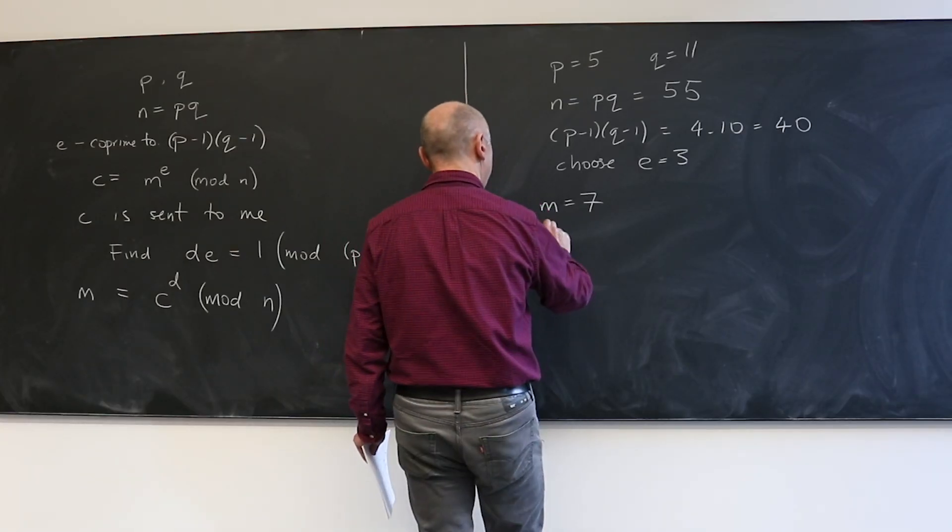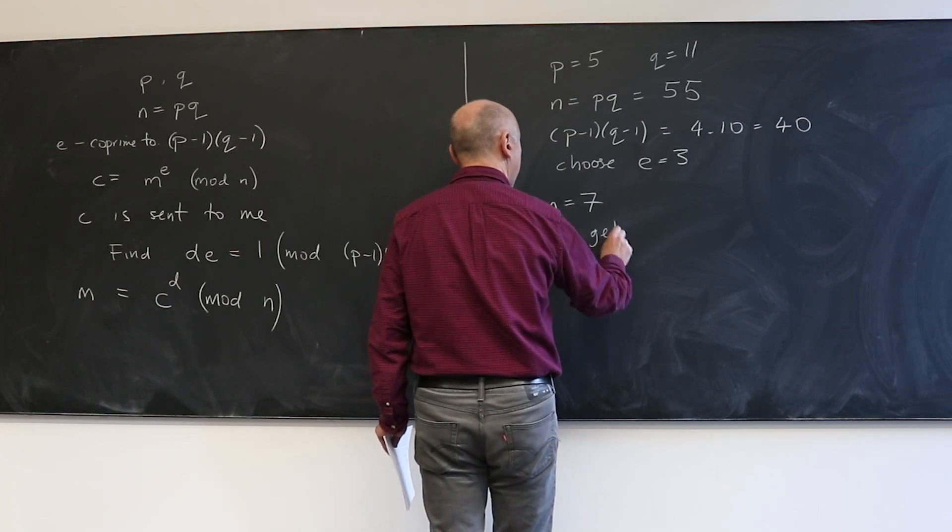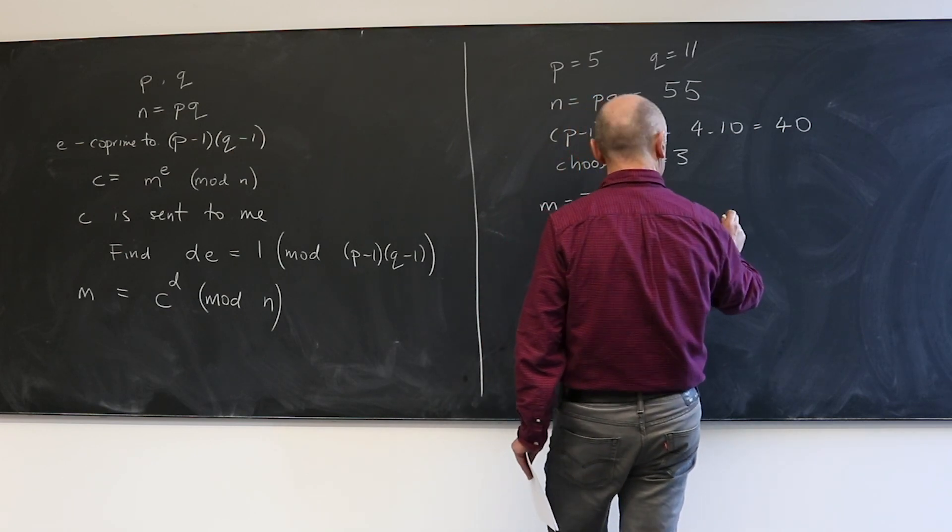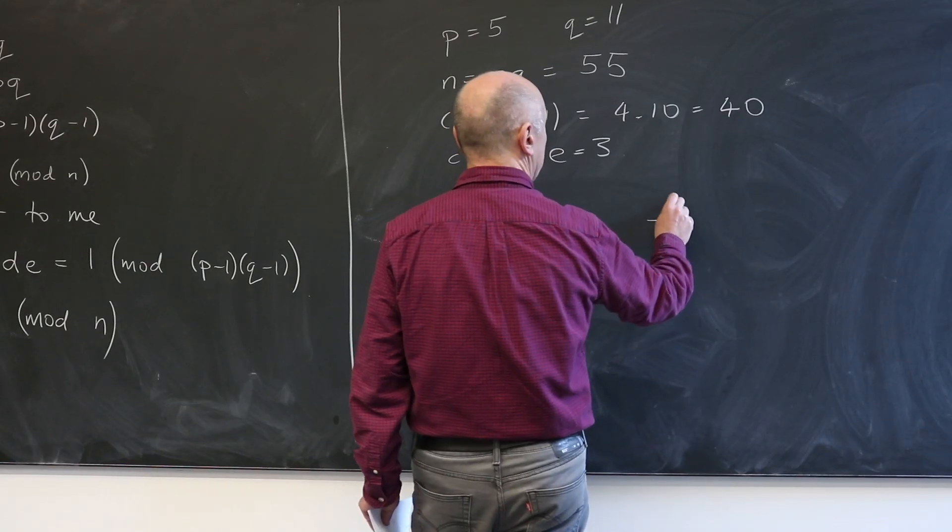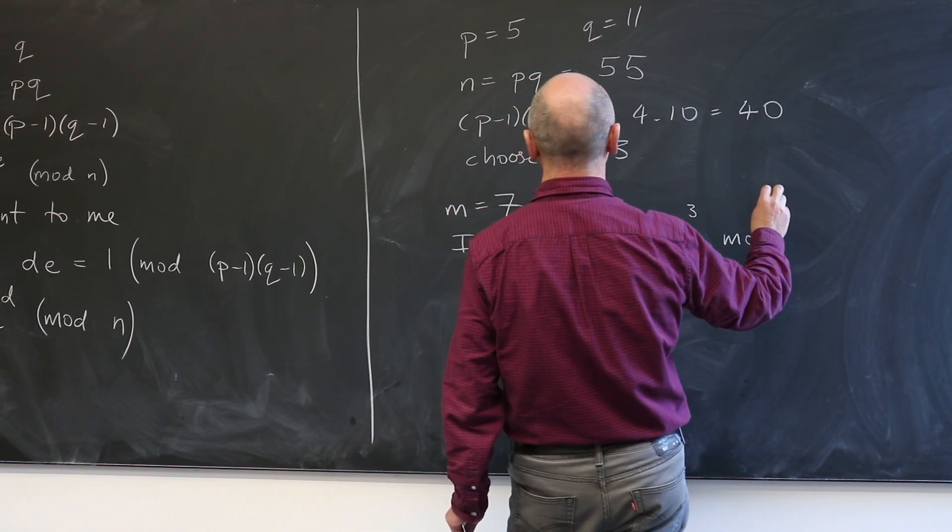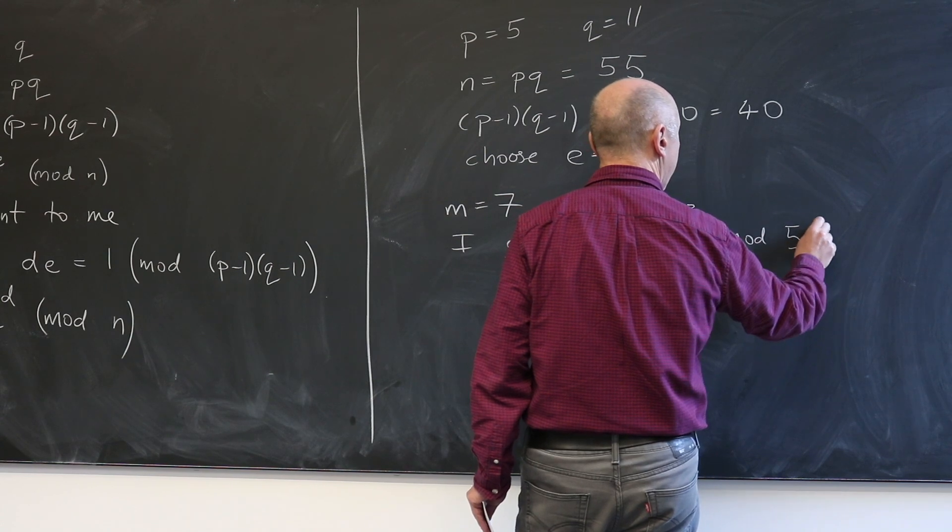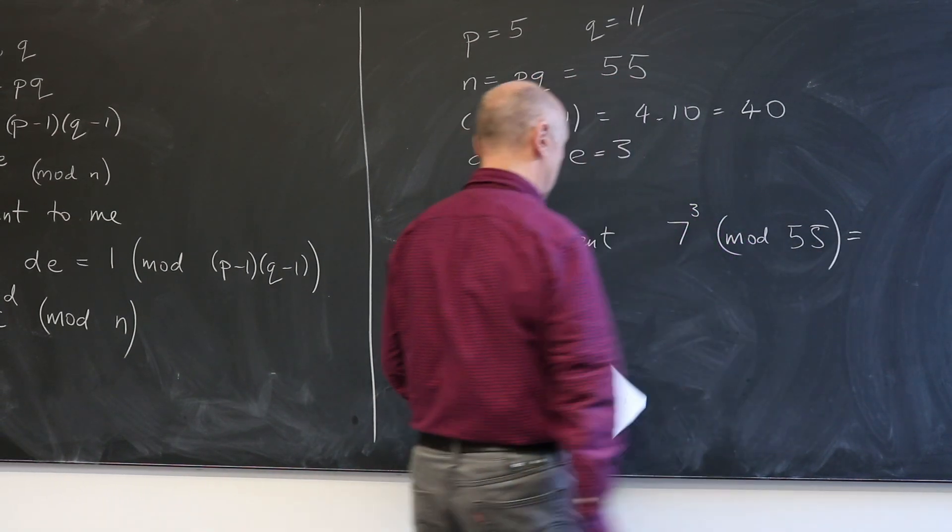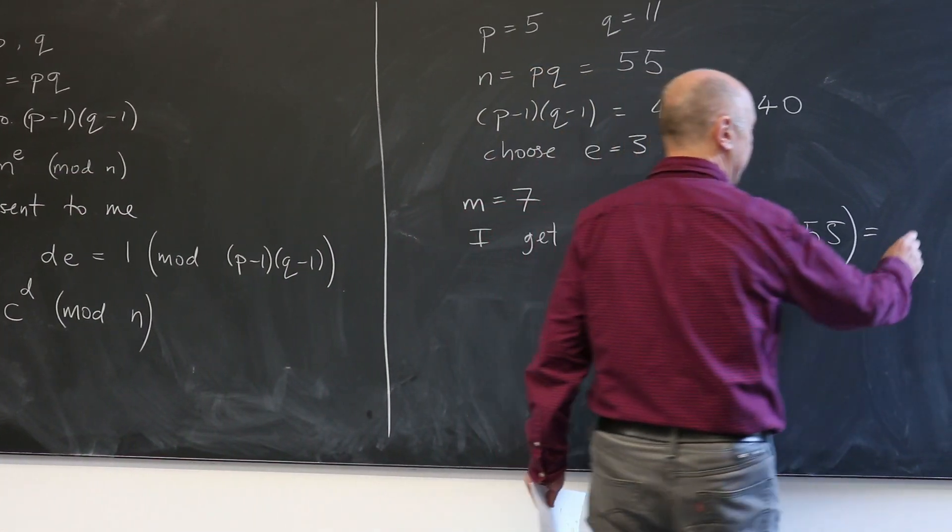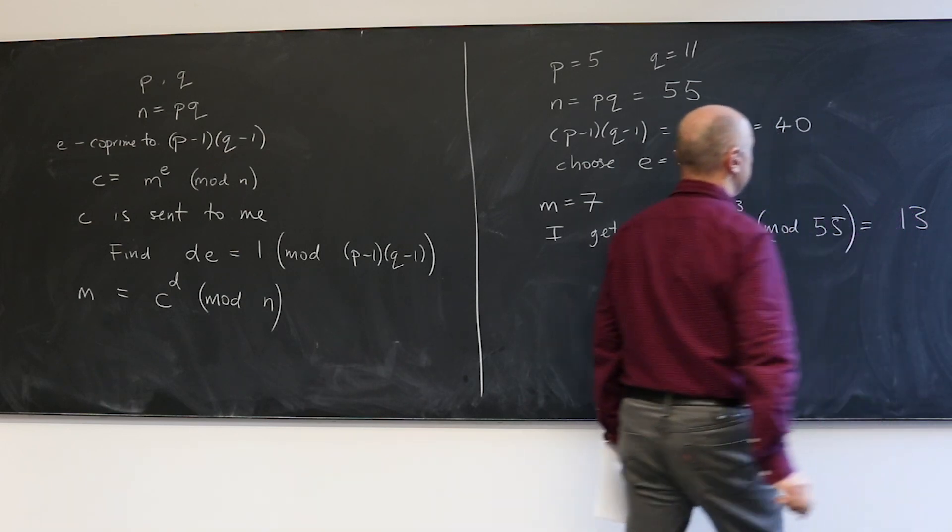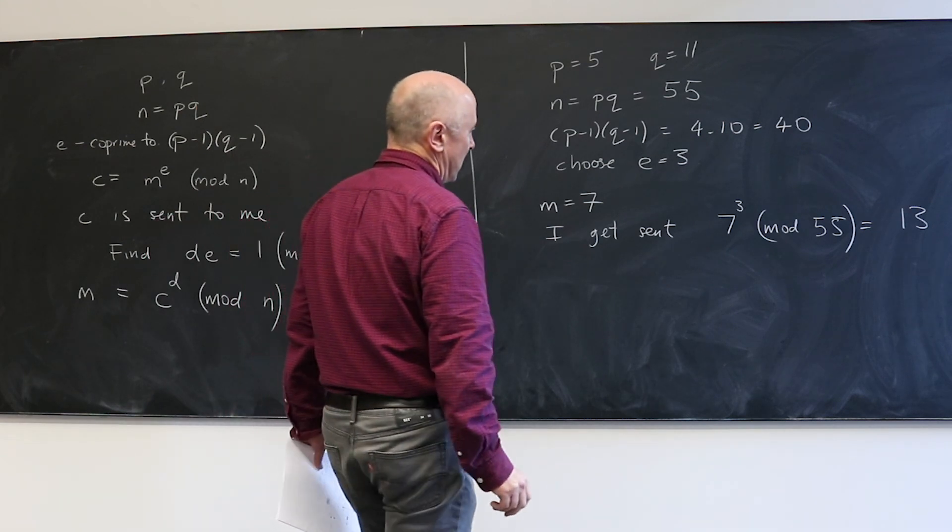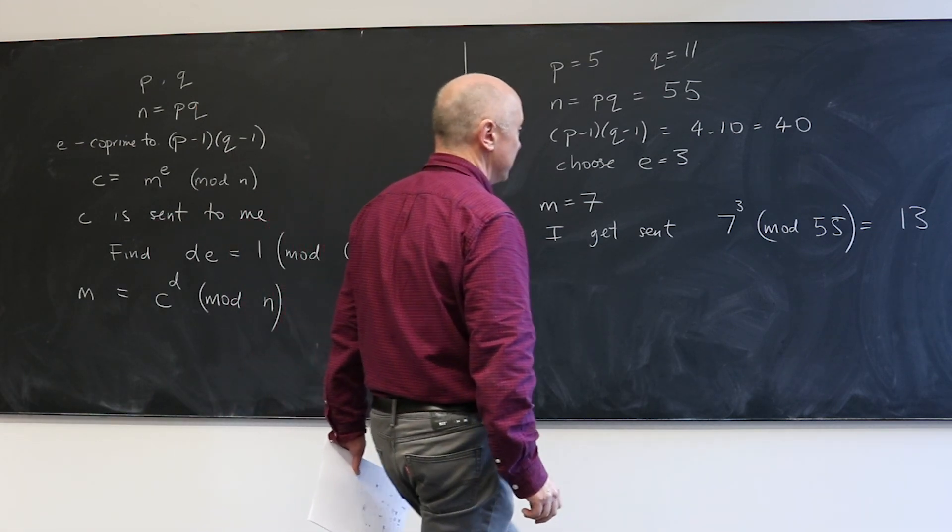So I get sent the number 7 to the power 3 modulo 55. So that's the number I get sent. This is C.